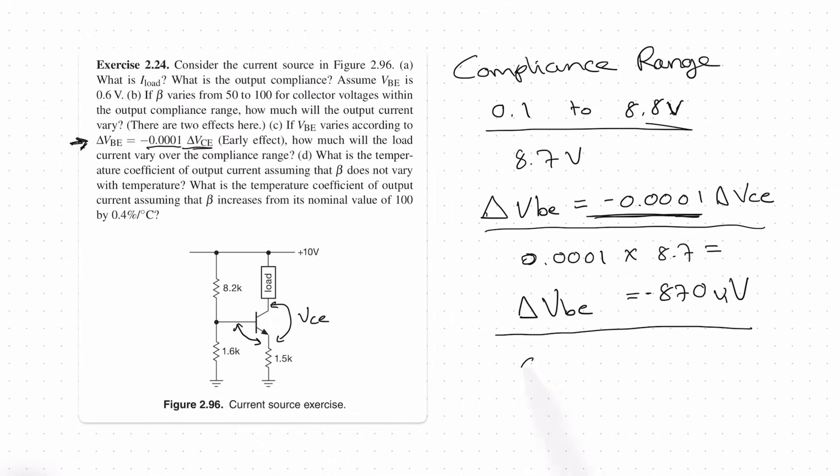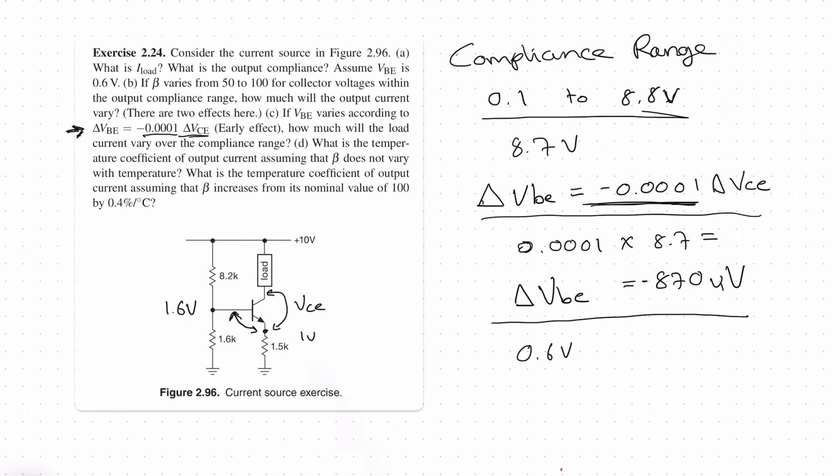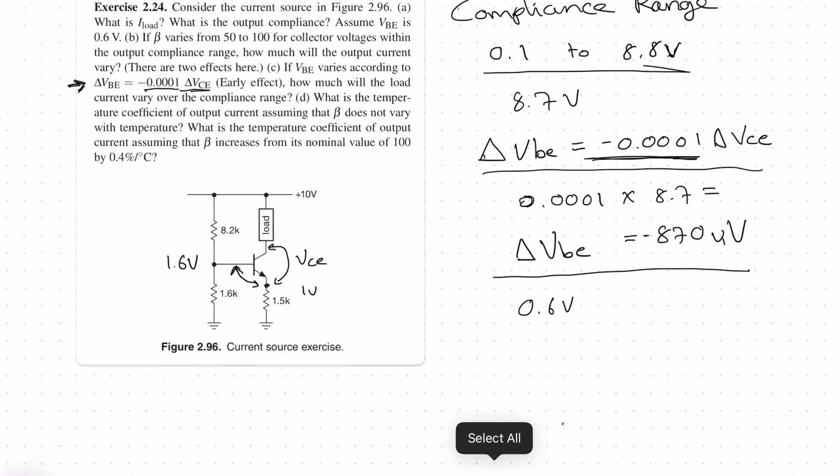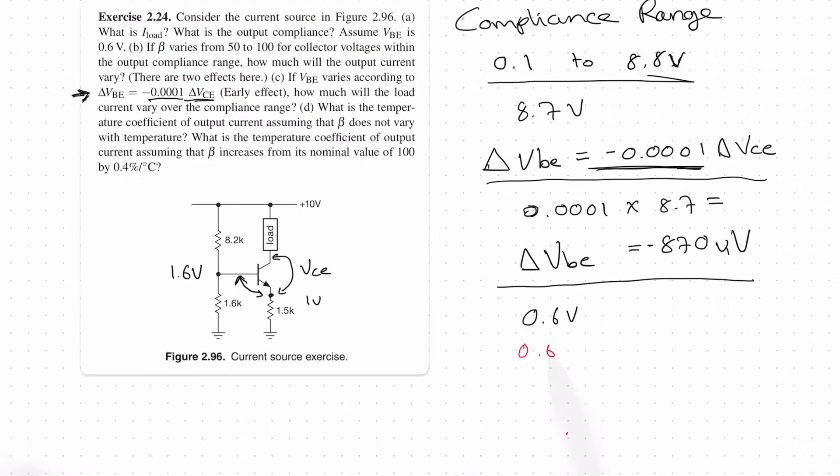So if we started with an assumption of 0.6 volts over here. So let's say we had 1.6 volts over here which is approximately true. We take 0.6 volts here and that means that we end up with 1 volt on this junction. Now when the VCE changes we know that VBE will go down by 870 microvolts. Therefore we have a new VBE voltage which is going to be 0.6 volts minus 0.00087 volts which obviously is not a massive change but this does result in the output current changing.